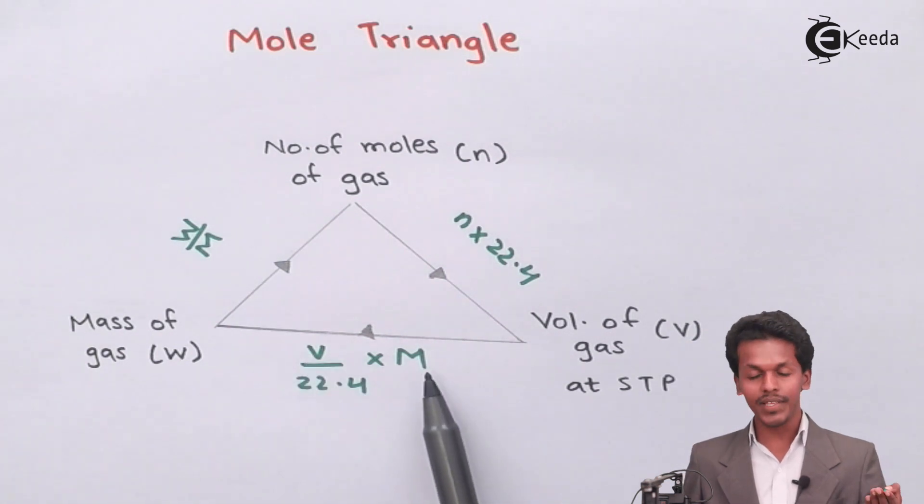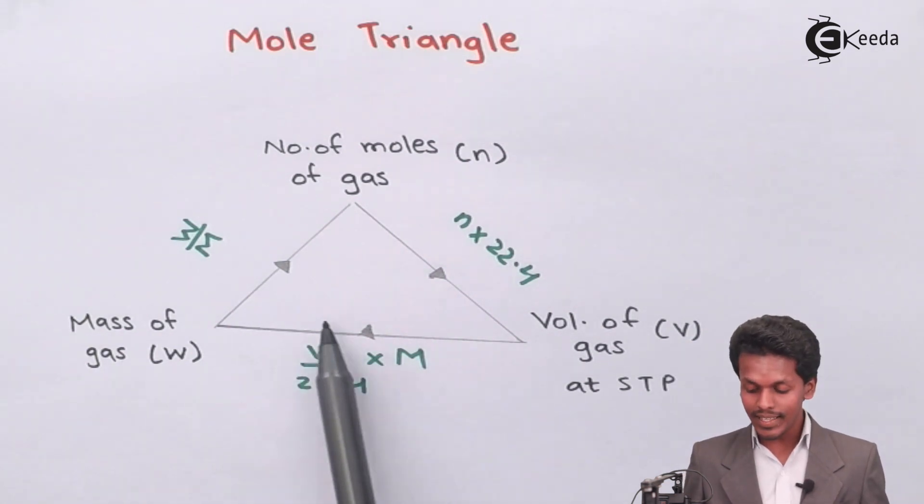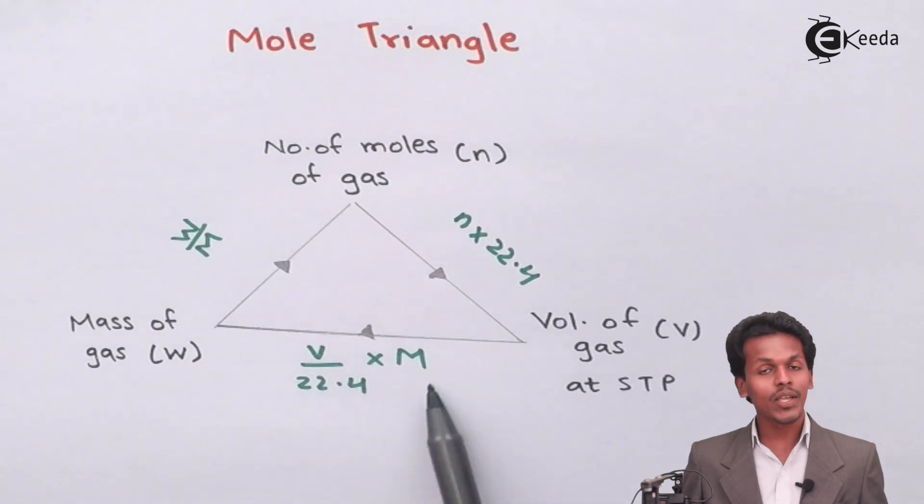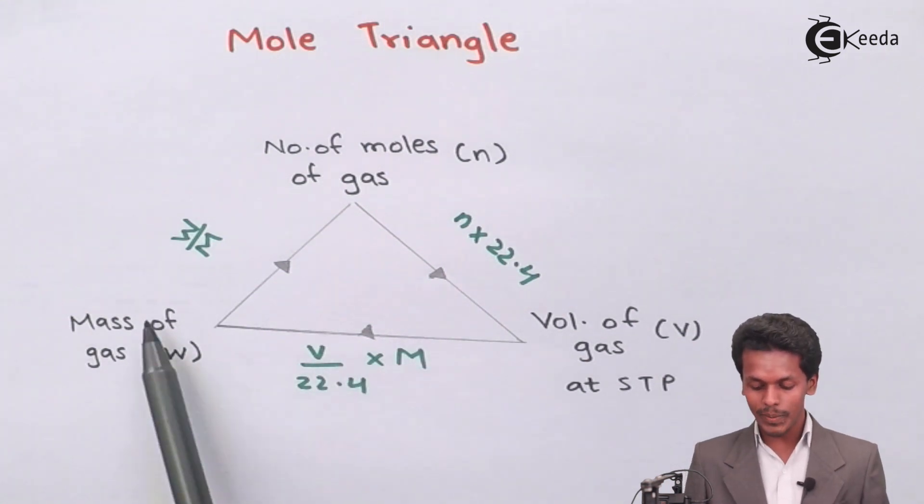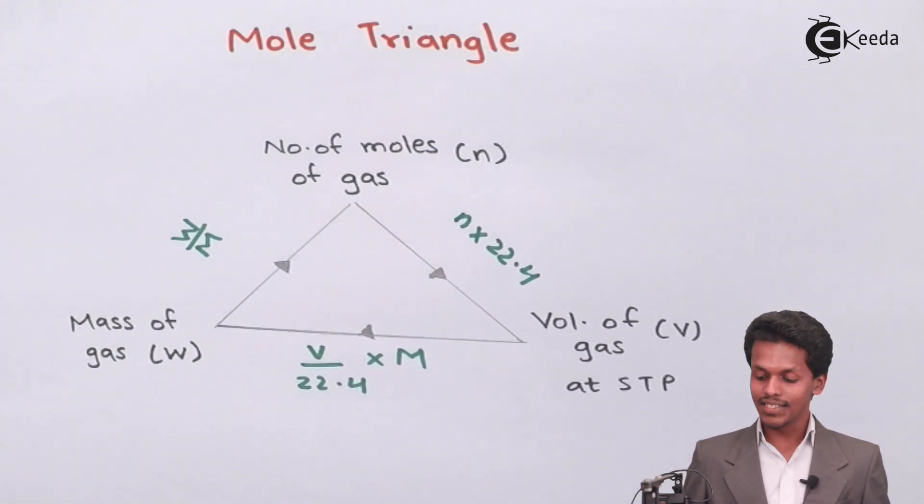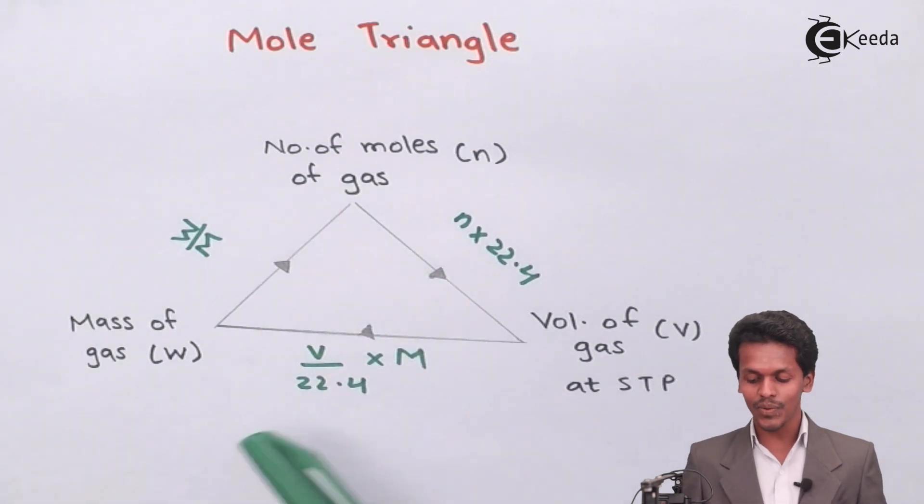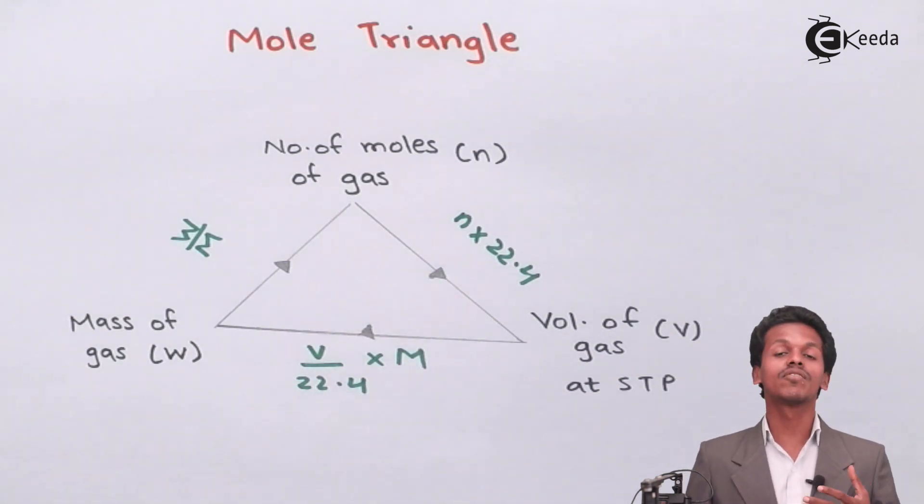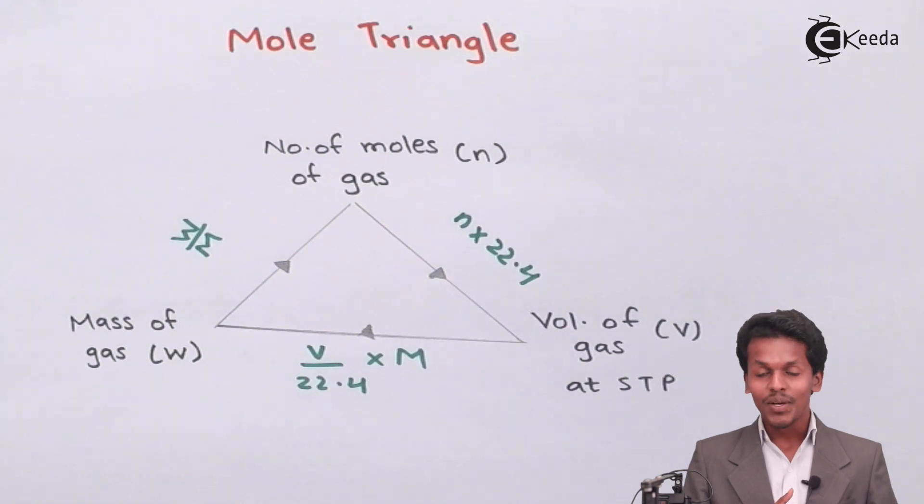Again, W means weight while M is molar mass. So if I connect these two in this equation, I can easily get the mass of the gas. This is the relationship between all three terms. This will be very helpful in solving numerical problems. I hope you have understood this mole triangle.